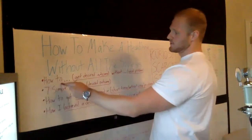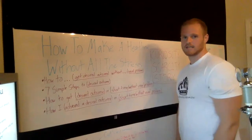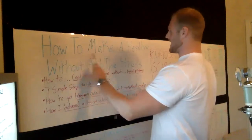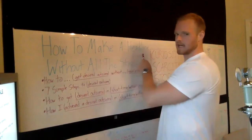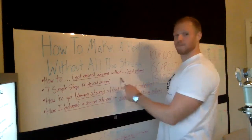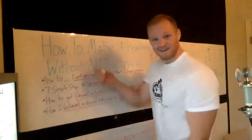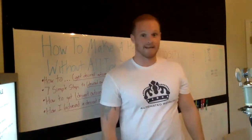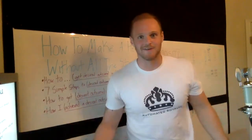The first one you guys should write down is: 'How to get [desired outcome] without [the usual problem].' Notice anything weird? Look at my title — 'How to make a headline without all the stress.' The desired outcome is to make a headline, and the usual problem is all the stress. People probably saw that and were like, 'I'm gonna like this section — I'm not stressing over headlines ever again, I've got to get this down.'